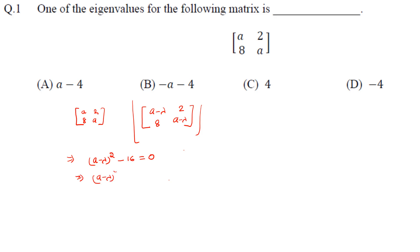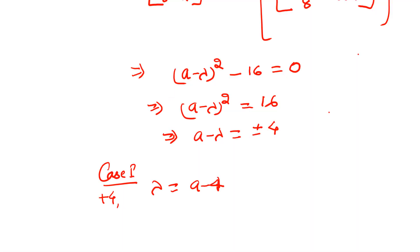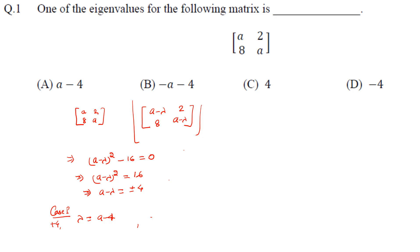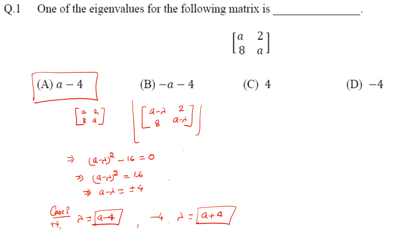This implies (a minus lambda) whole square equals 16, so a minus lambda equals plus or minus 4. If it is +4, then lambda equals a minus 4. If it is minus 4, then lambda equals a plus 4. So there are two eigenvalues: a minus 4 and a plus 4. Among the options, a minus 4 matches option A.